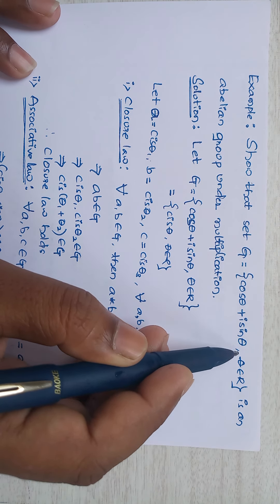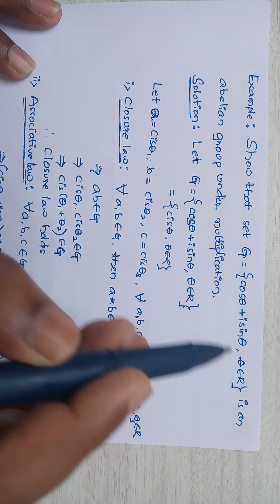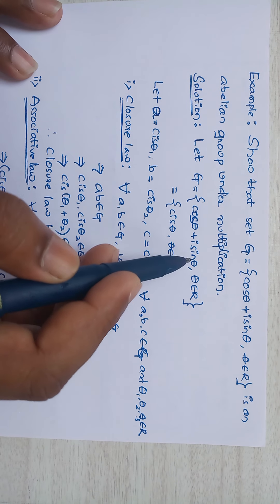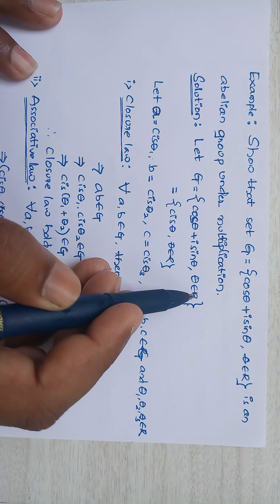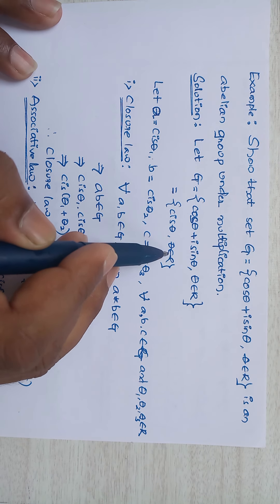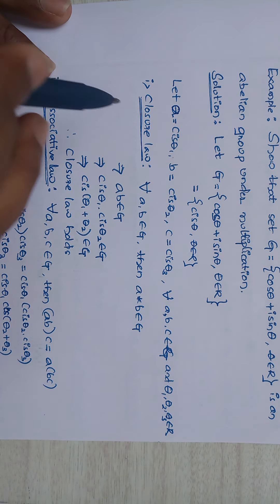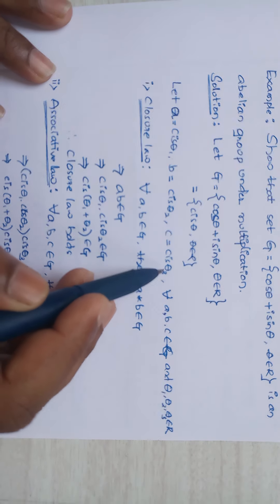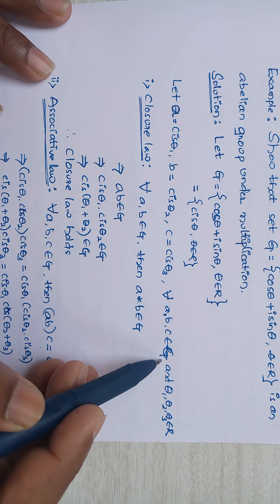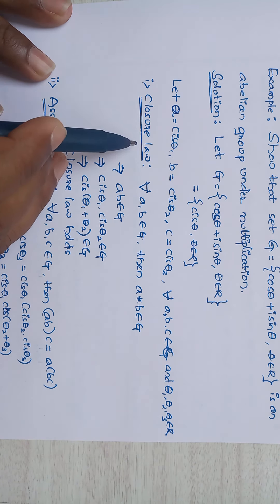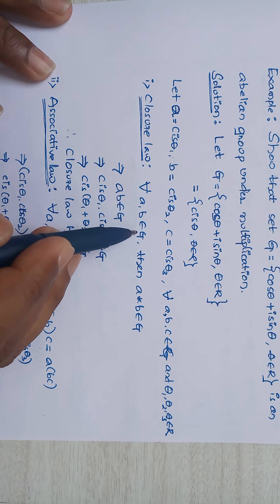Next example: show that the set G = {cos θ + i sin θ | θ ∈ ℝ} is an abelian group under multiplication. Let G = {cos θ + i sin θ | θ ∈ ℝ}. cos θ + i sin θ can be written as cis θ. Let a = cis θ1, b = cis θ2, c = cis θ3, for all a, b, c ∈ G and θ1, θ2, θ3 ∈ ℝ.